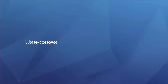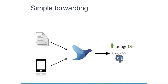Next, we show the popular use cases. This is a simple use case: use Fluentd for data collection from multiple data sources. Read local files and receive data from the application. Fluentd sends data to databases like MongoDB or RDBMS.